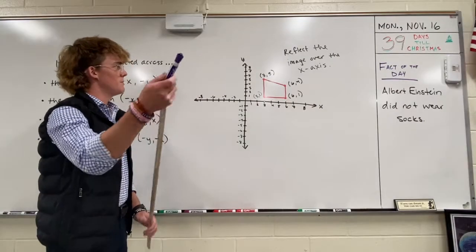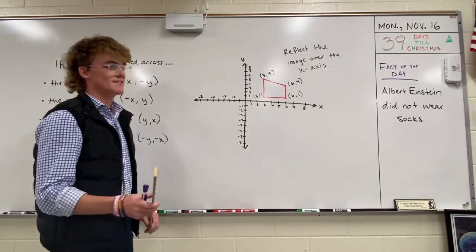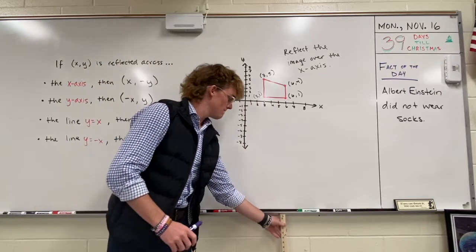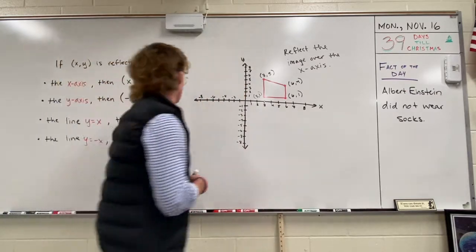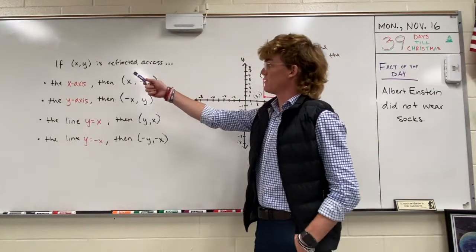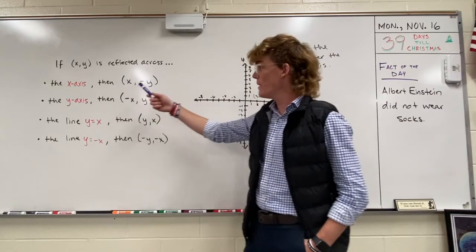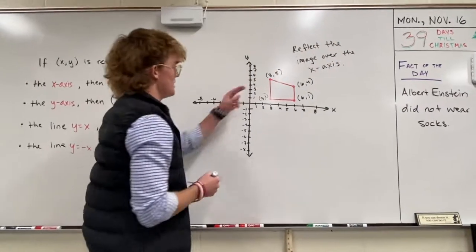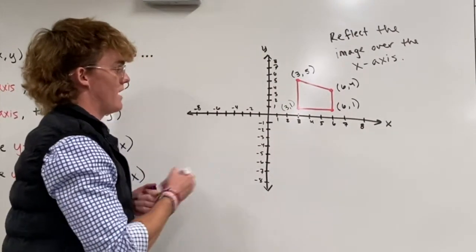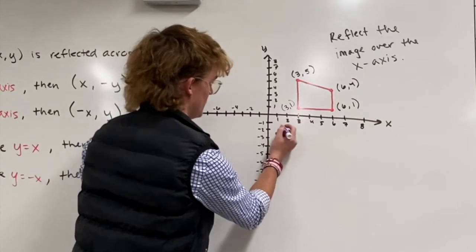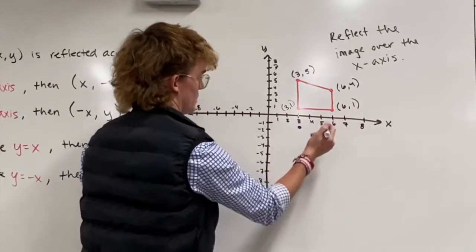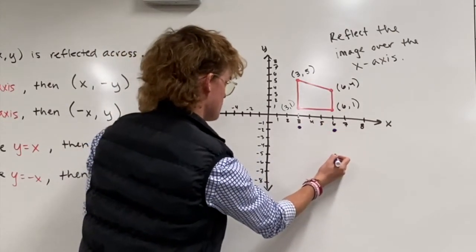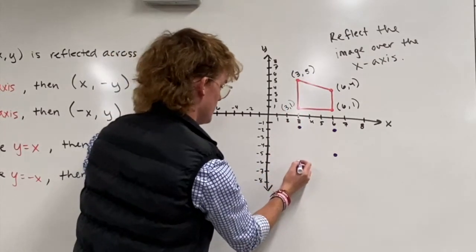For our first example, we're going to reflect this image over the x-axis. Following the pattern from yesterday, when x,y is reflected across the x-axis all we do is change the sign of the y value. So starting here we'll have (3, -1), this one turns into (6, -1), this becomes (6, -4), and this will be (3, -5).